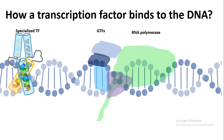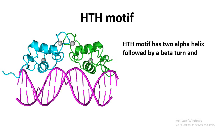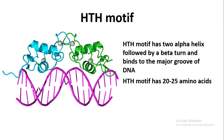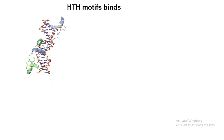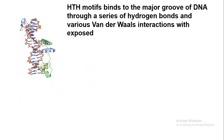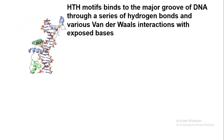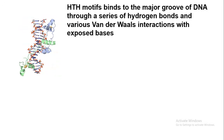First, we will talk about the helix-turn-helix motif, or HTH motif. The HTH motif has two alpha helices followed by a beta turn, and it binds to the major groove of the DNA. The HTH motif is roughly 20 to 25 amino acids long, and it binds to the major groove of the DNA through various interactions like hydrogen bonds, van der Waals interactions, etc.